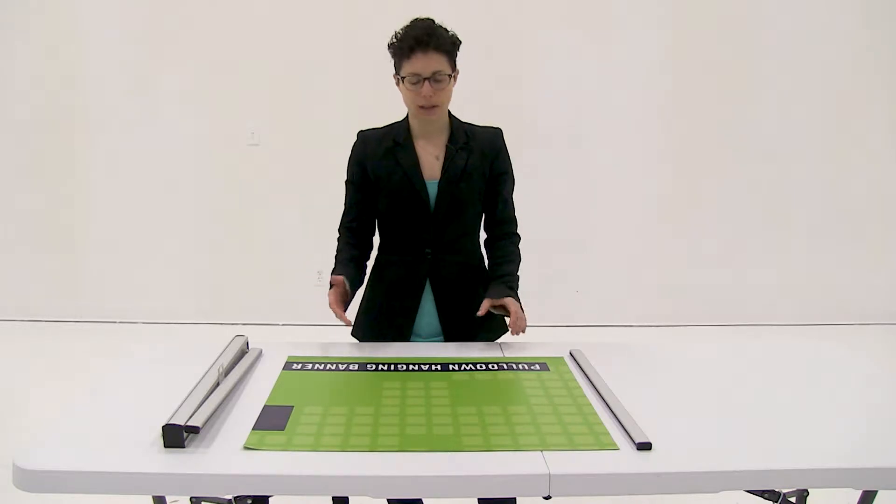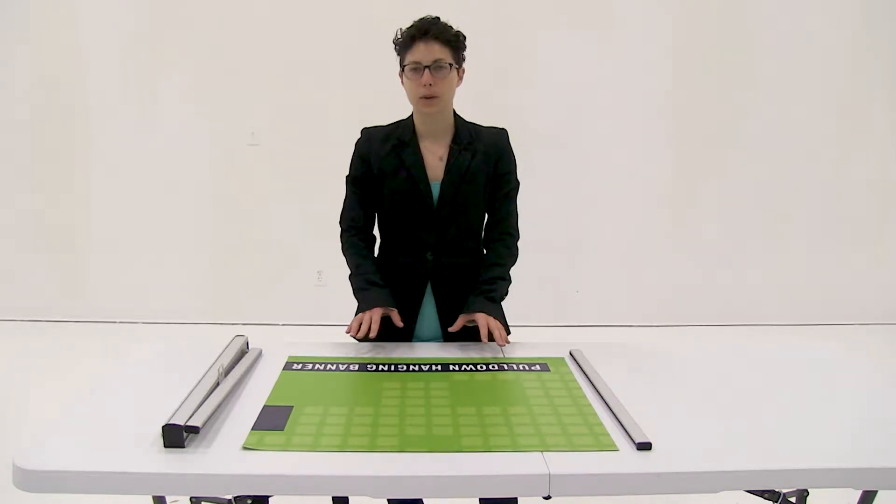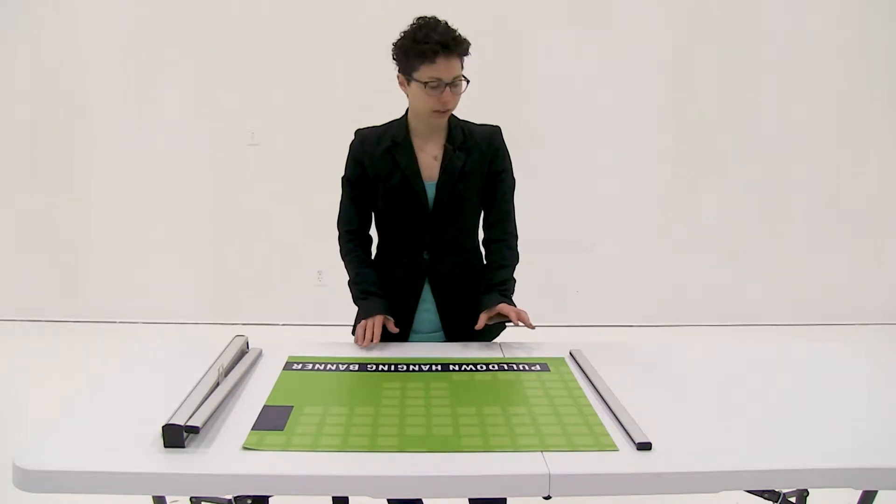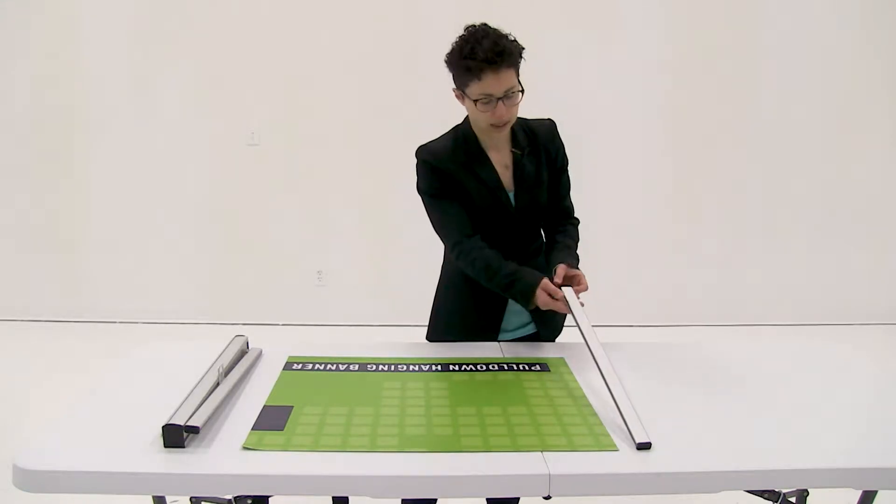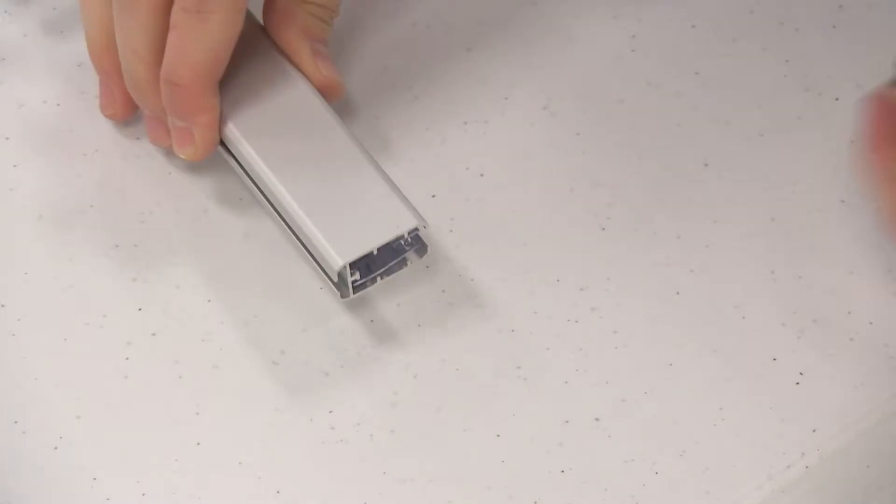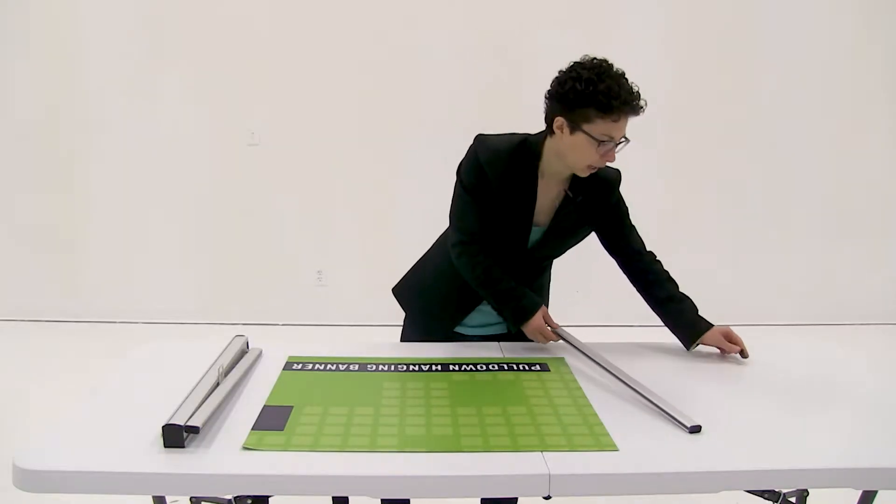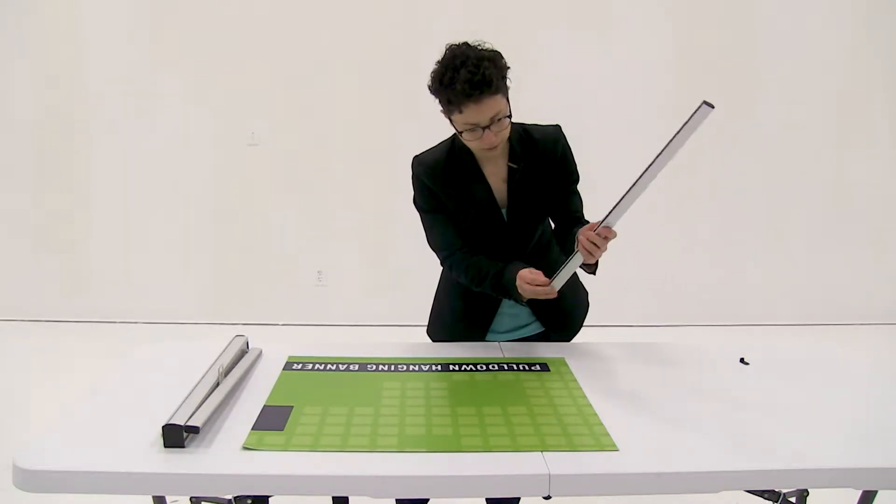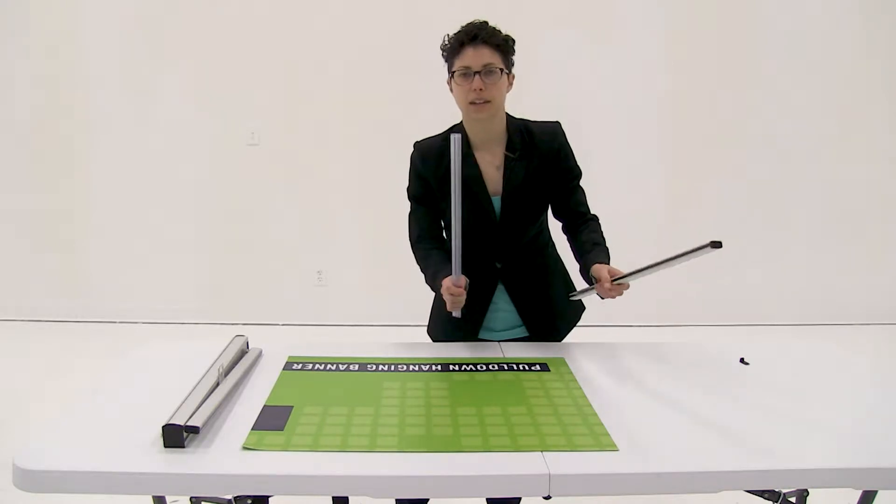Welcome to instructional videos. Today we are going to install the graphic into the pull-down hanging banner. First, remove an end cap from one of the railings. Set it off to the side and slide out the clear plastic snap rail.